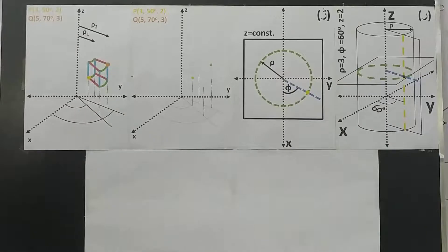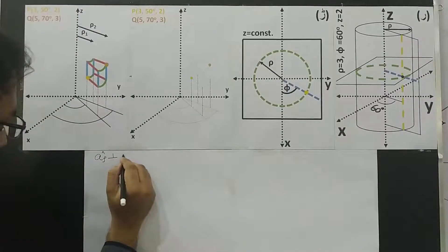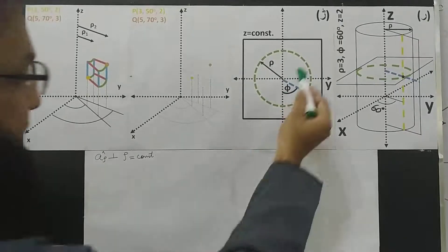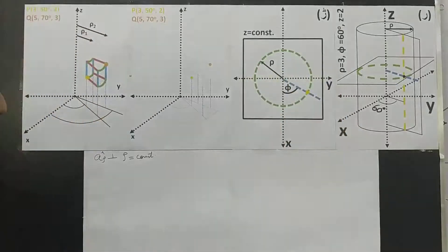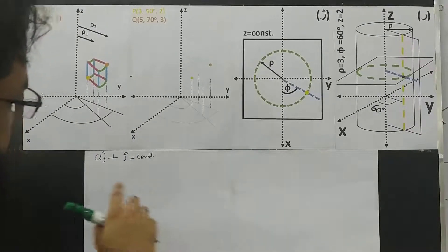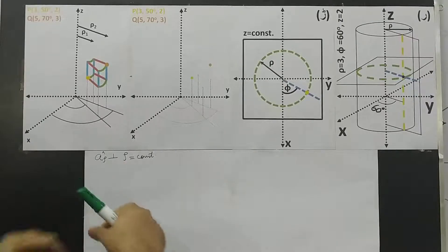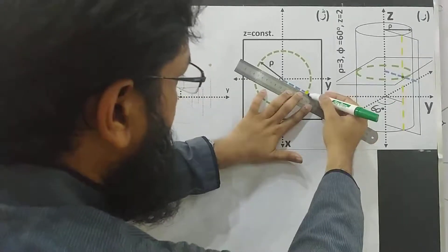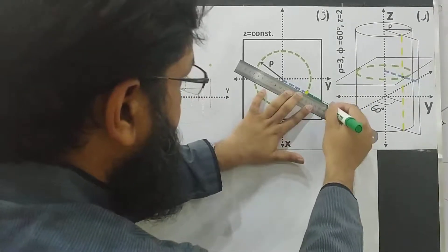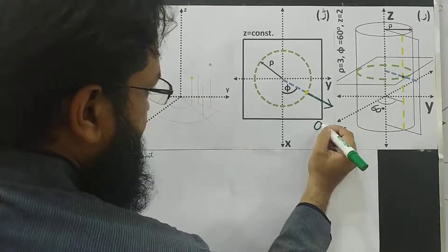So a_rho is the unit vector which should be perpendicular to the rho equals constant surface. In two dimensions, the rho equals constant surface is a circle — the green surface. If I draw this unit vector, it should be perpendicular to rho, and it should always point in the direction of increasing values of rho. This green line is showing us a_rho, fulfilling both definitions.